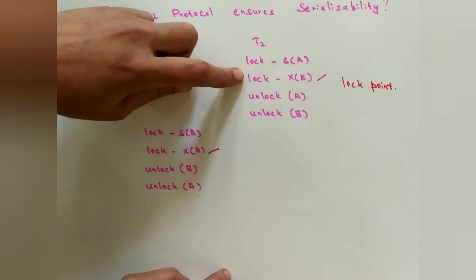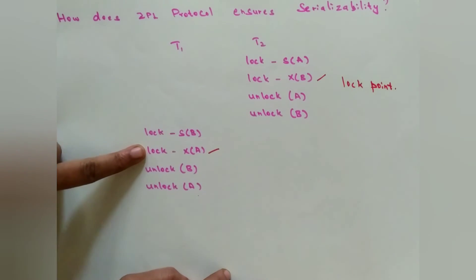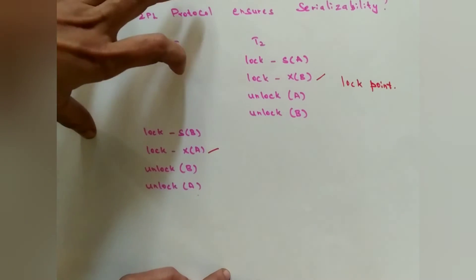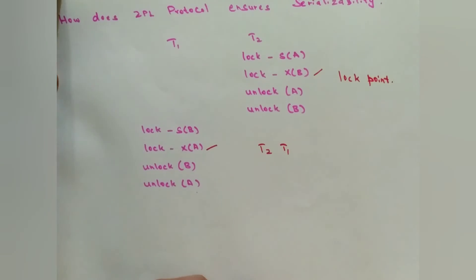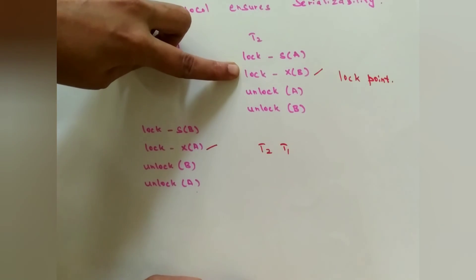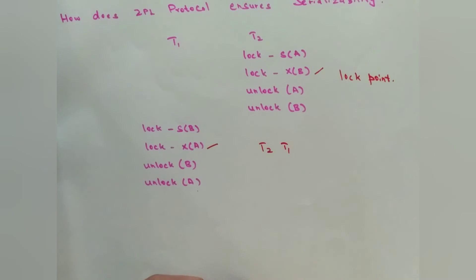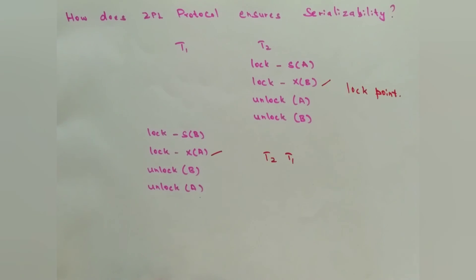To find the serializability ordering, arrange the transactions according to their lock points — that ordering gives the serializability ordering. Here, T2's lock point occurs first and T1's lock point occurs next, so the serializability ordering for this schedule is T2 followed by T1. This is how the two-phase locking protocol finds the serializability ordering and thereby ensures serializability.